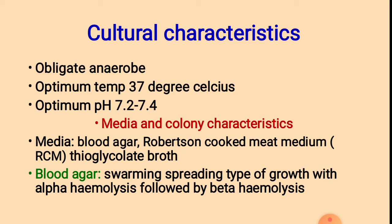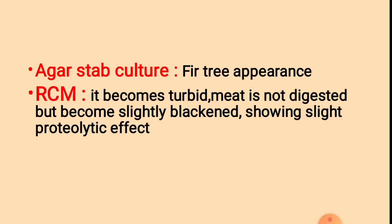Robertson cooked meat is an anaerobic media used in the field of microbiology. On blood agar, they form swarming, spreading type of growth with alpha haemolysis followed by beta haemolysis. Alpha haemolytic colonies form green dark colored colonies, whereas beta haemolytic colonies form lightened or yellow or transparent colonies. In agar stab culture, they give a fir tree appearance.